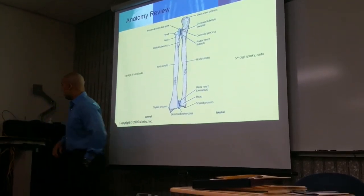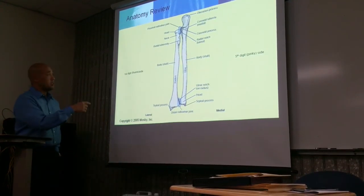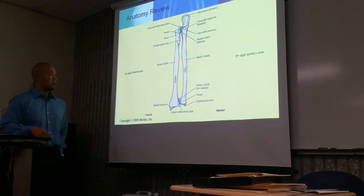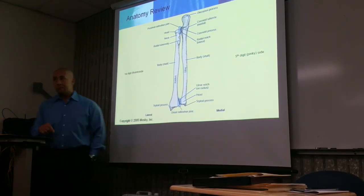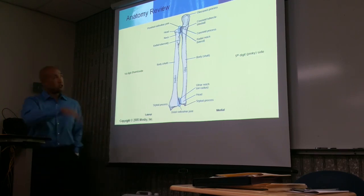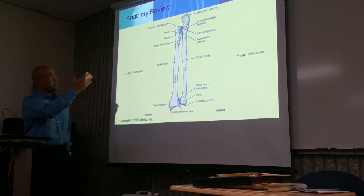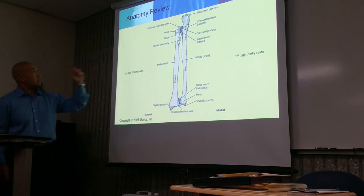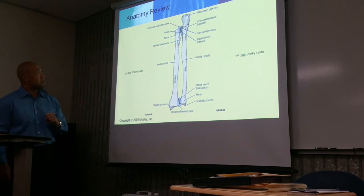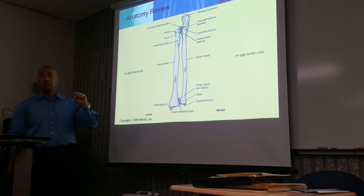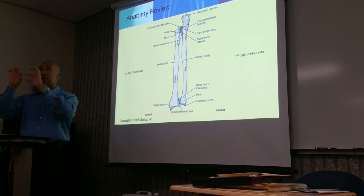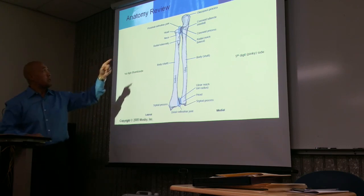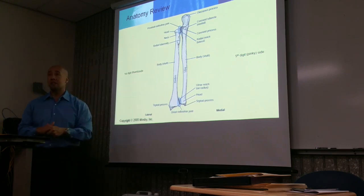So here we have the radius. Pay close attention to how the anatomy is set up. The most proximal part — towards the elbow — is the head, the radial head. It's unique in its shape because it looks like a tire. Then we have the neck and then the tuberosity.